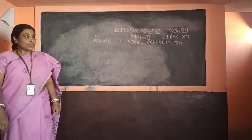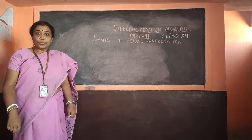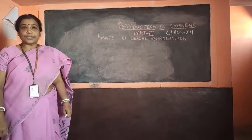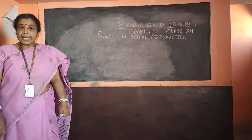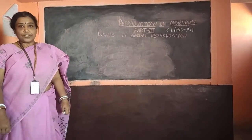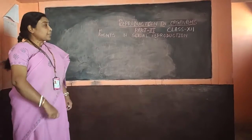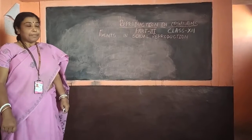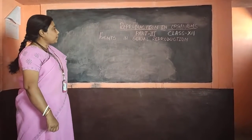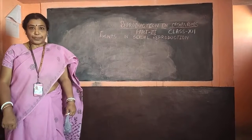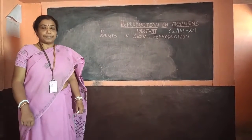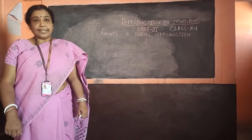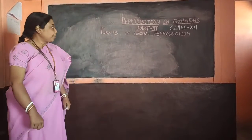Hello children. I hope you all have gone through the contents of the first chapter. In part 1 and part 2 I have dealt with some aspects of reproduction in organisms. Now today, in part 3, we are going to deal with events in sexual reproduction. Before that, I would like to introduce myself — I am Kakoli Saha from D.A.V. Public School, C.C.L., a biology teacher.